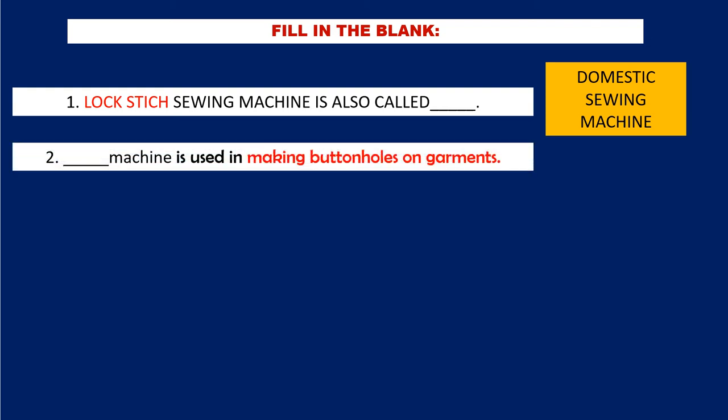Question 2: Blank machine is used in making buttonholes on garments. The answer is button-holer. Button-holer machine is used in making buttonholes on garments.